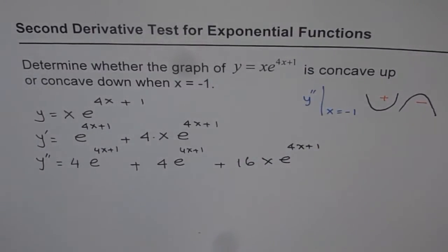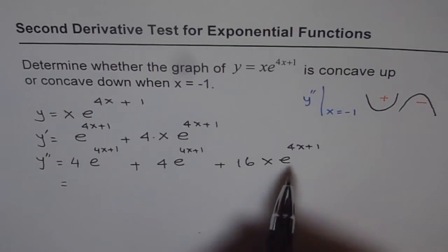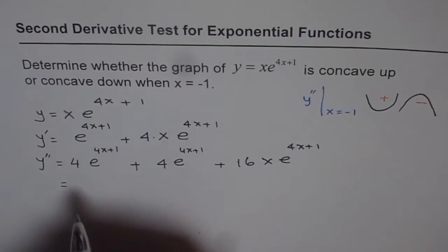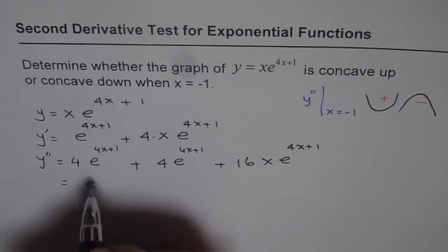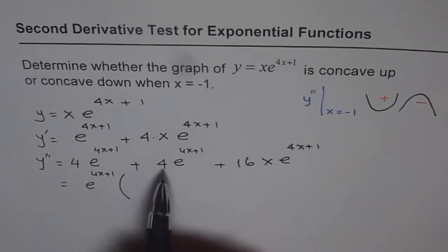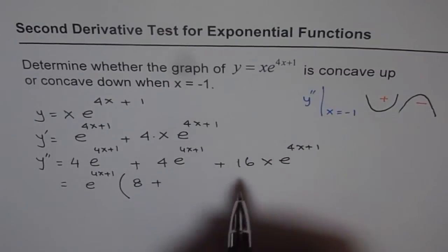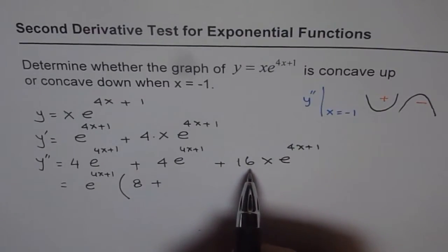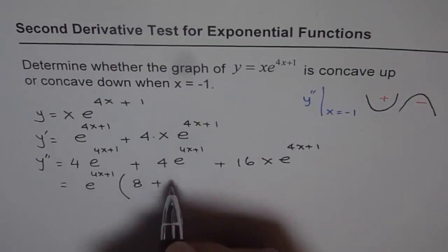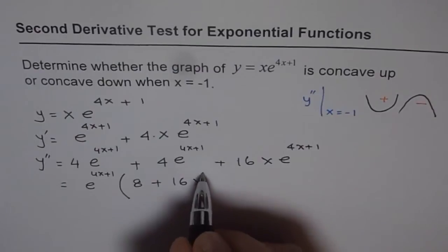We can simplify by factoring out e to the power of 4x plus 1. Combining the constant terms, 4 plus 4 gives 8, so we get e to the power of 4x plus 1 times the quantity 8 plus 16x.